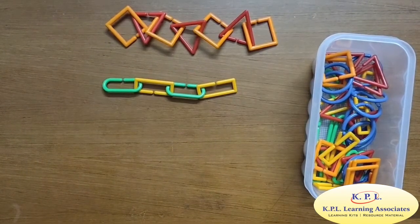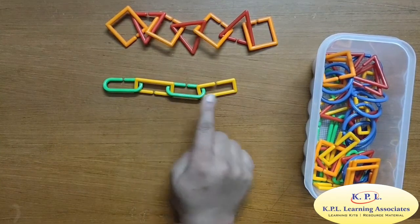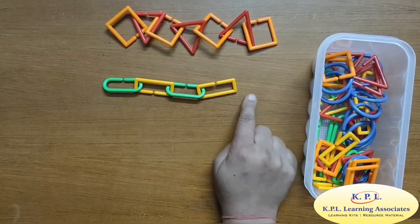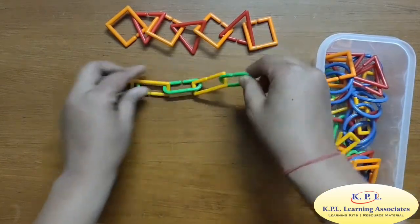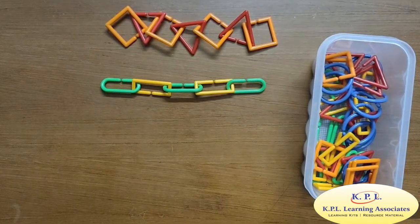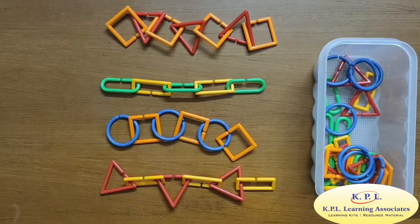Another one. Green oval, yellow rectangle, green oval, yellow rectangle. What will be the next? Green oval. So we can have various patterns like this.